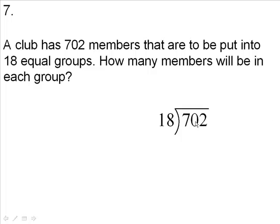Now, 18 times what will equal 54? 54 is the number I'm going for. I know that 18 will go into 70 three times. Three times 18 is 54. If you go four times, four times 18 is 72, and that's too much. When you subtract, you get 16. Bring down the 2. Now, 18 goes into 162 nine times. Nine times 18 is 162.